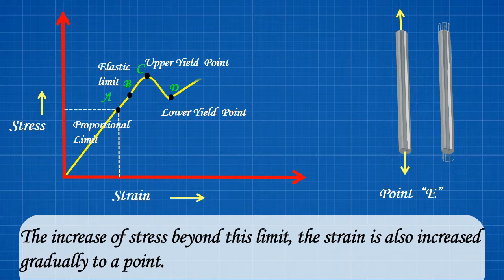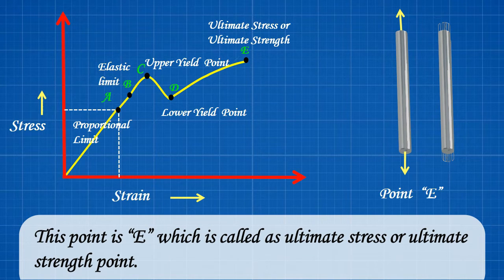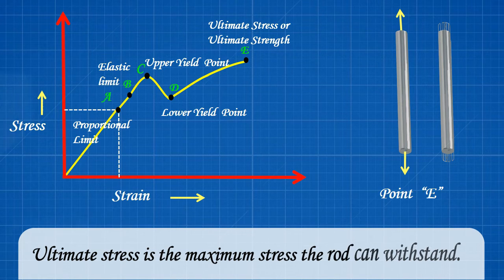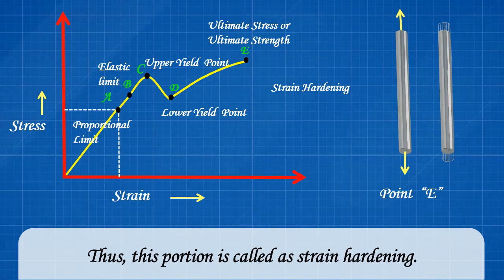The increase of stress beyond this limit, the strain is also increased gradually to a point. This point is E which is called as ultimate stress or ultimate strength point. Ultimate stress is the maximum stress the rod can withstand. Thus, this portion is called as strain hardening.